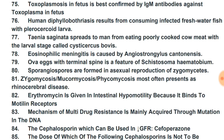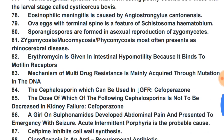Sporangiospores are formed in asexual reproduction of Zygomycetes. Zygomycosis (also called mucormycosis or phycomycosis) most often presents as rhinocerebral disease.